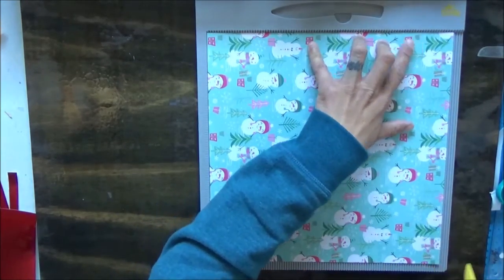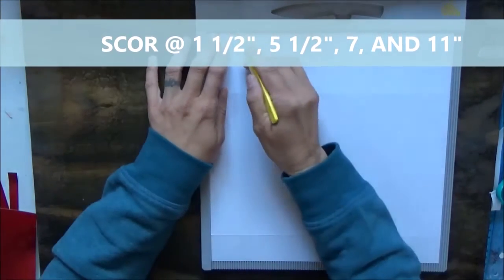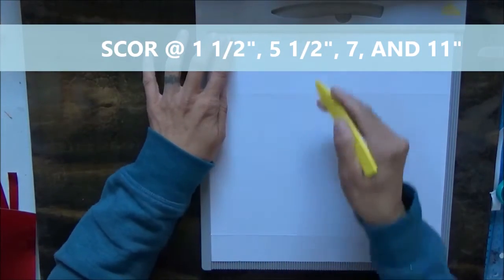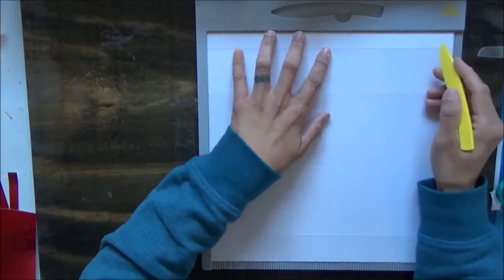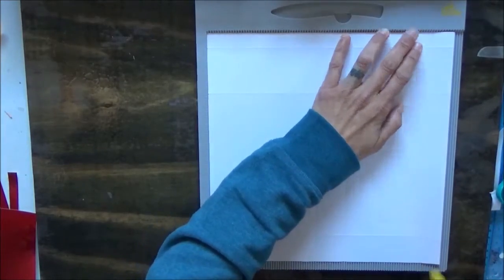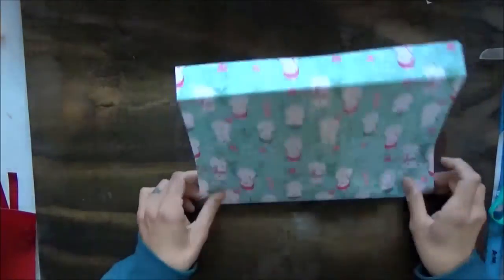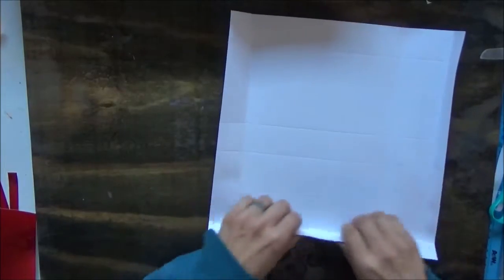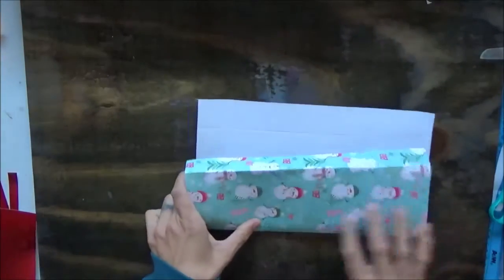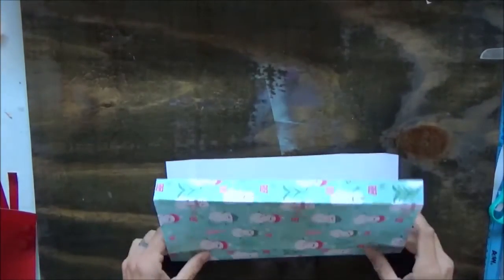I'm going to flip it over and score it at one and a half, five and a half, seven, and eleven. That's our score lines. Now we'll go ahead and fold in our lines.